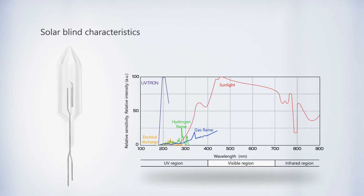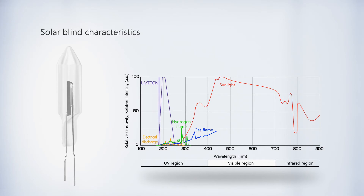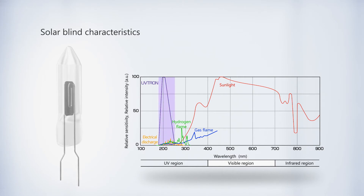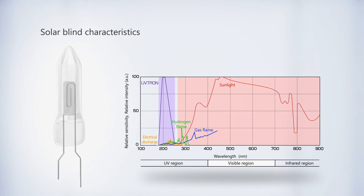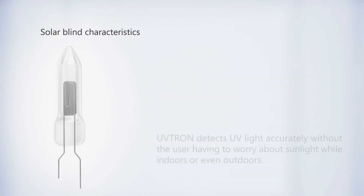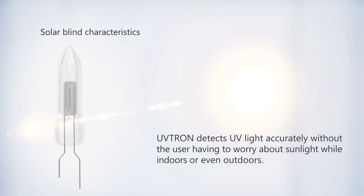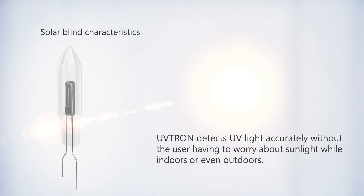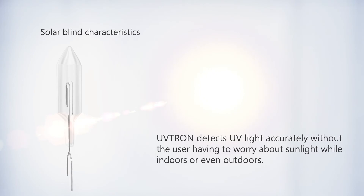UVtron has sensitivity in a very narrow spectral range from 185 to 260 nanometers. It exhibits so-called solar blind characteristics and so is unaffected by sunlight. This enables UVtron to detect UV light accurately without caring about sunlight, whether indoors or even outdoors.